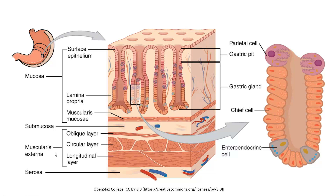Histologically, the stomach is very different from any of the other primary digestive organs. We're going to look at a cartoon of stomach histology first, go over the general features, and then look at real micrographs and see how two of those four layers in particular are modified to enable the stomach to do its job of chemical and mechanical digestion of swallowed food.